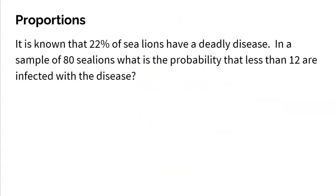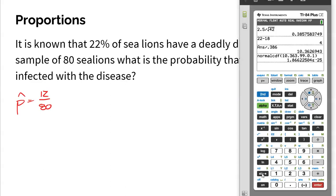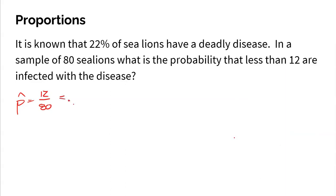Now let's do the same type of problem working with proportions. 22% of sea lions have a deadly disease. In a sample of 80 sea lions, what is the probability that less than 12 are infected? First, I want to figure out what sample proportion that would be: 12 out of 80 is 15%. This kind of sounds like a binomial distribution — and in fact it could be calculated that way, but the binomial distribution can be approximated with the normal model as long as certain conditions are met.